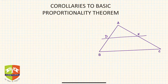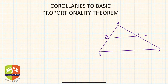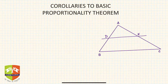Hello friends, welcome again to this new session on triangles. In the last session we saw a very important theorem and its proof — the Basic Proportionality Theorem. Here we are going to study some of the corollaries to the Basic Proportionality Theorem. Corollaries are results which can be directly seen from some established result — it's not a new or different theorem, but the same theorem with a different manifestation.